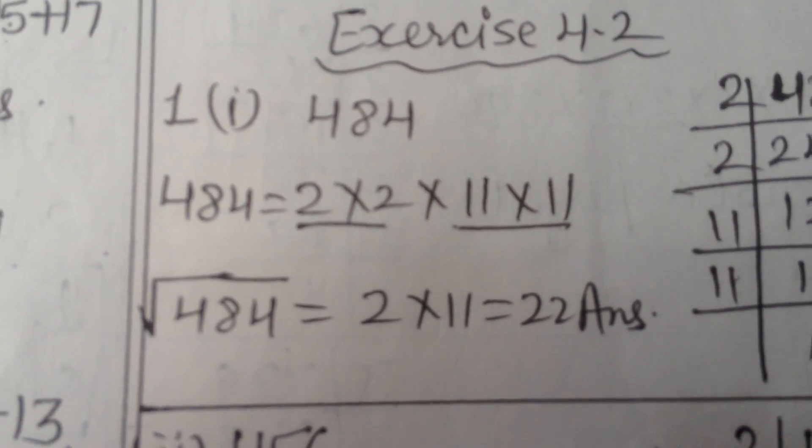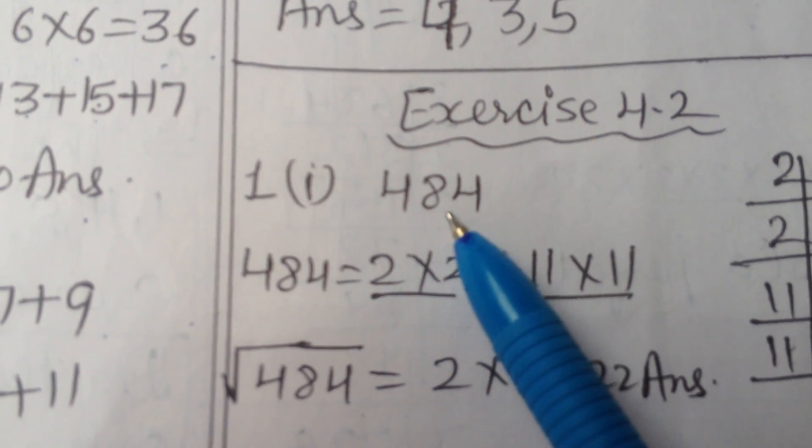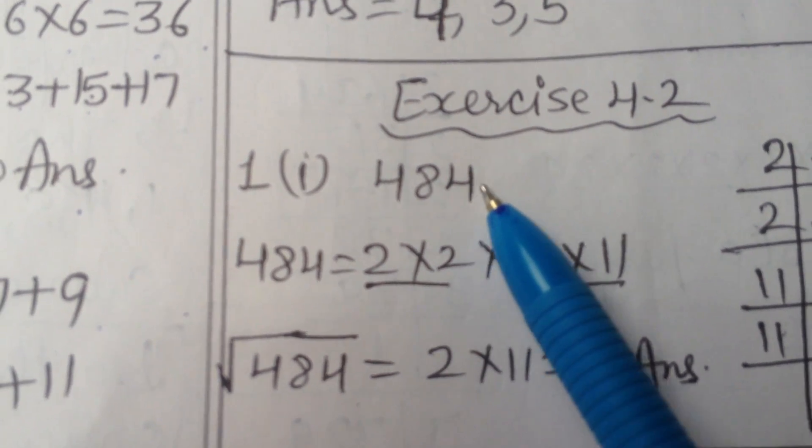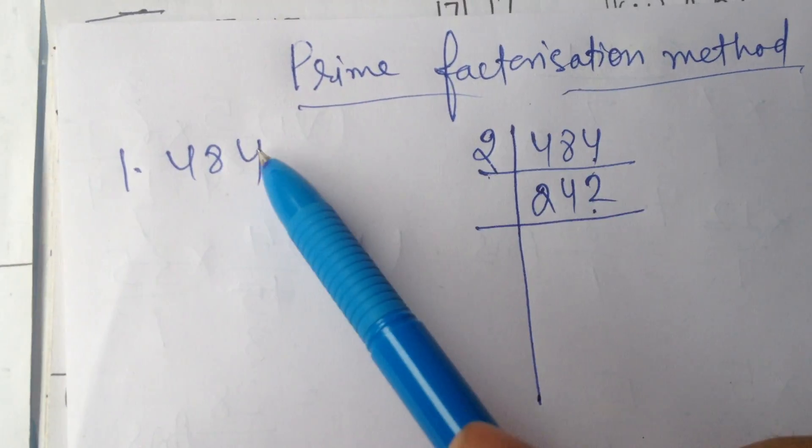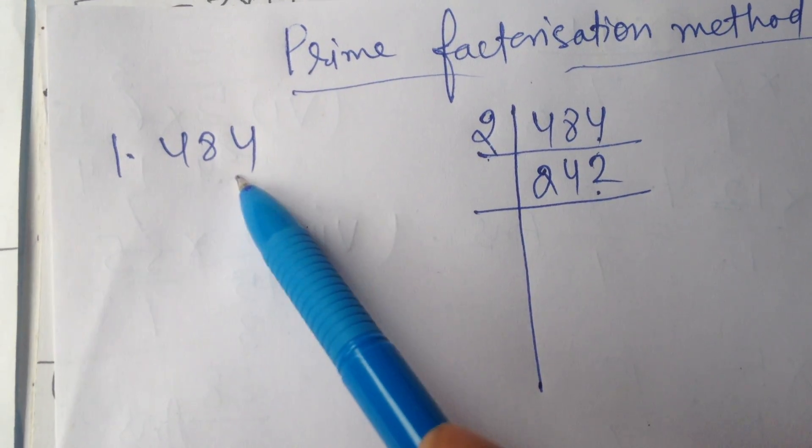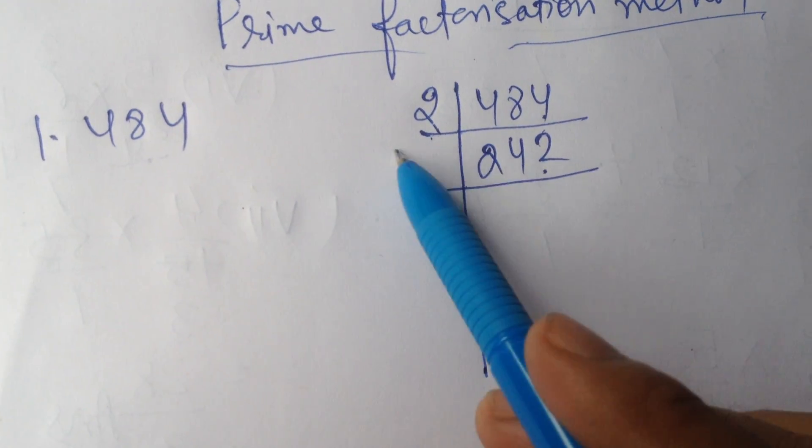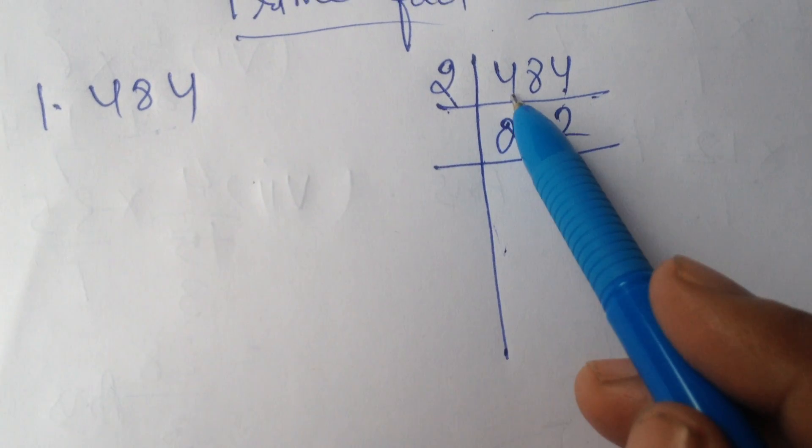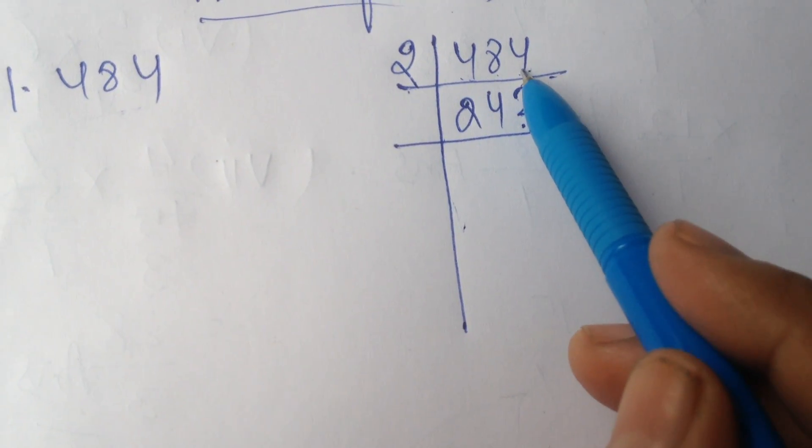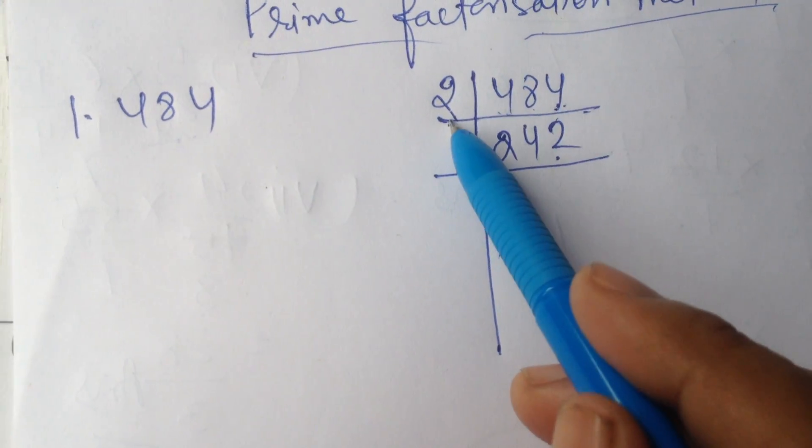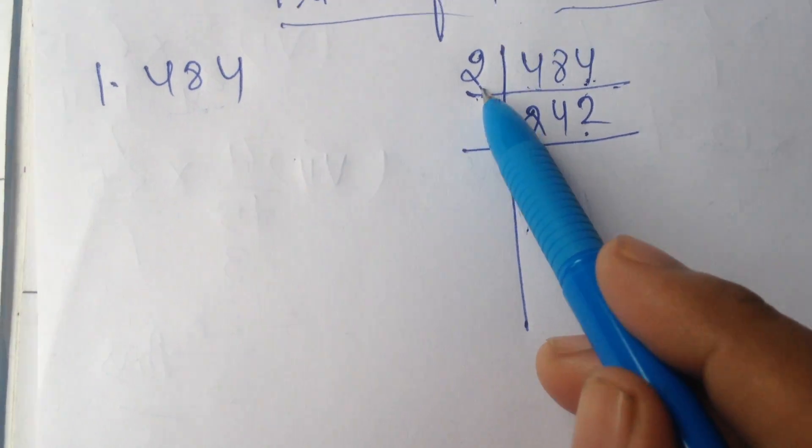First question, first part. We will here find square root of 484 by prime factorization method. Prime factorization method. Like here, question is 484. We will make the prime factors. 484. Check last digit. Last digit is even number. So we will divide by the smallest prime number, that is 2.